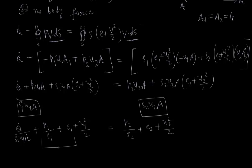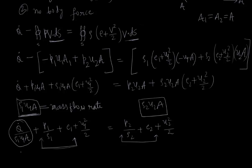The internal energy plus pressure over density terms combine to give enthalpy h. We know that rho1·U1·A is equal to the mass flow rate. So Q-dot divided by mass flow rate gives us the rate of heat transfer per unit mass flow rate, and our equation becomes: h1 plus U1²/2 equals h2 plus U2²/2.